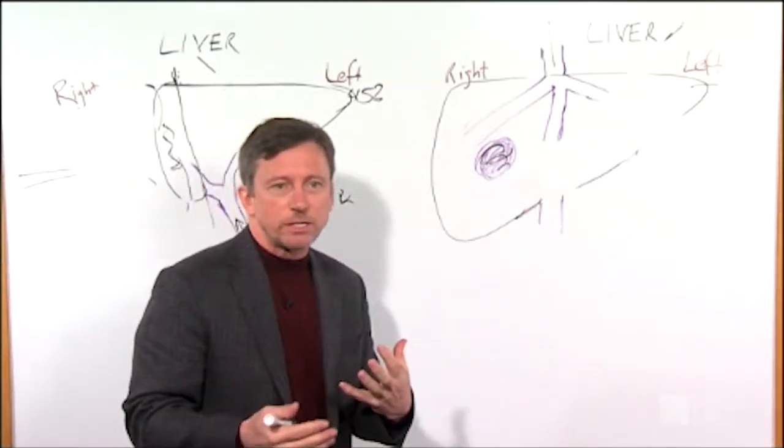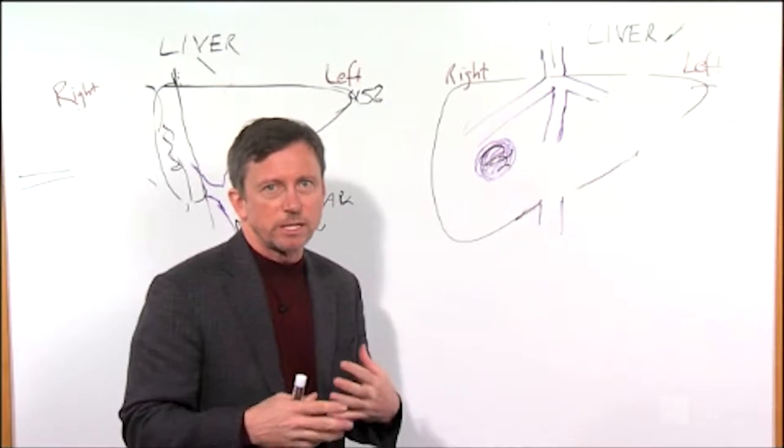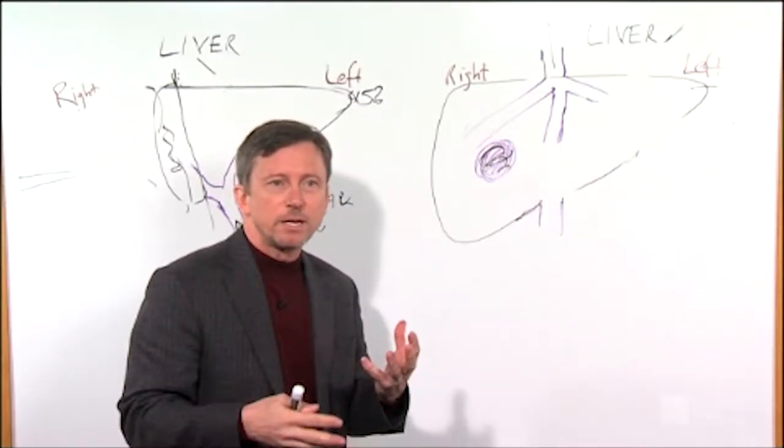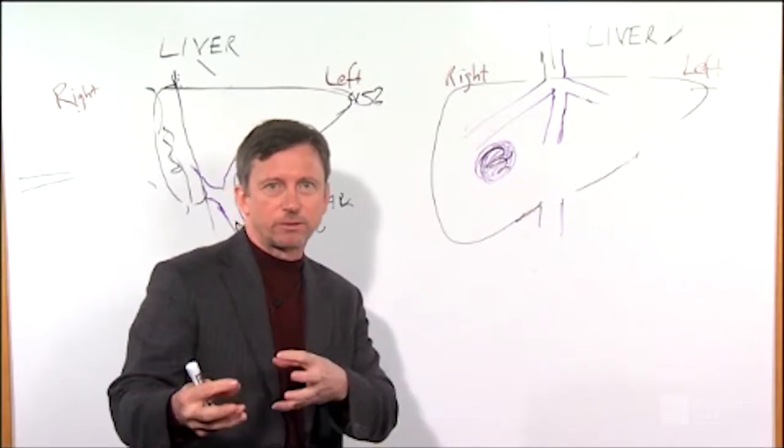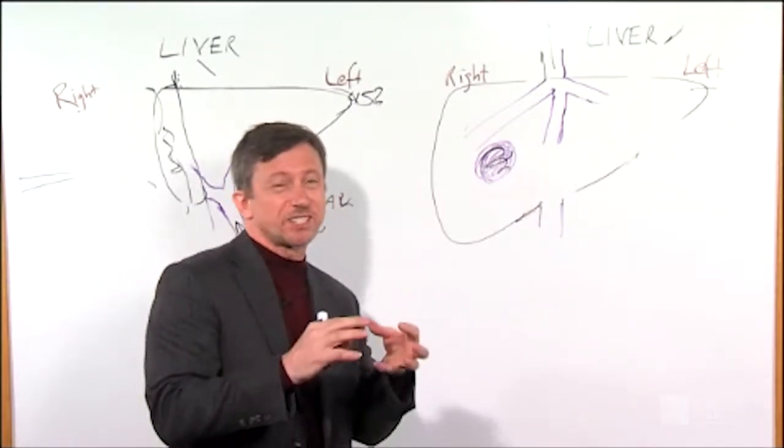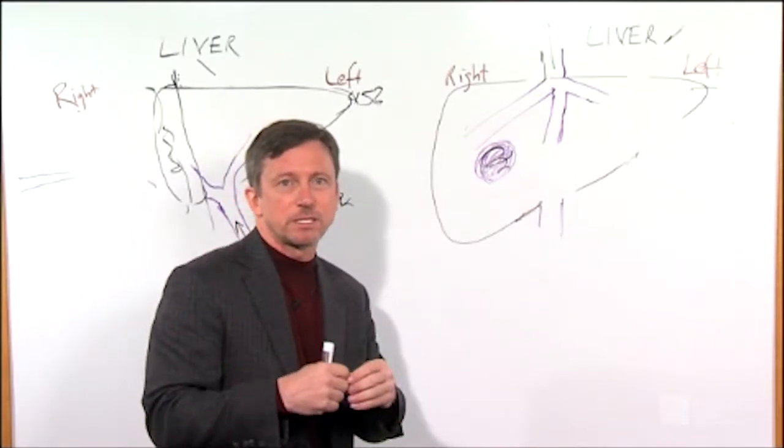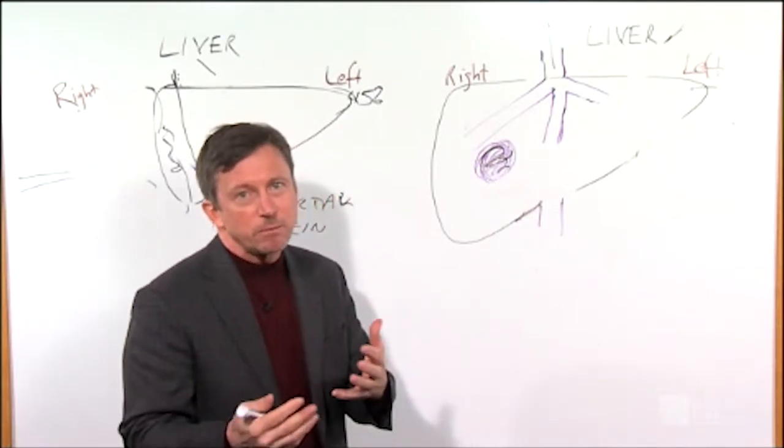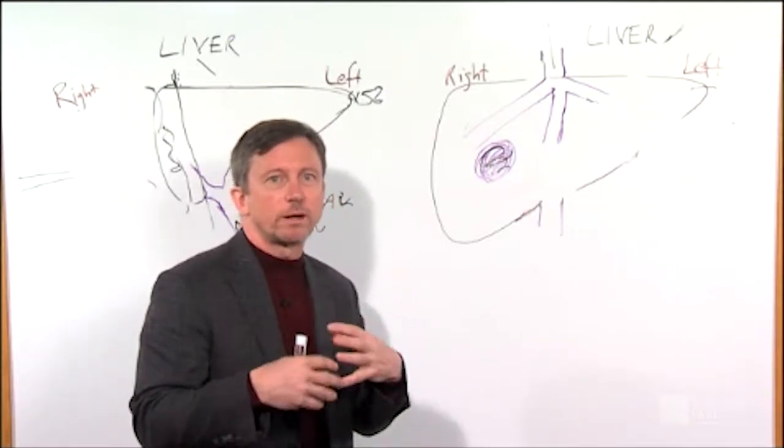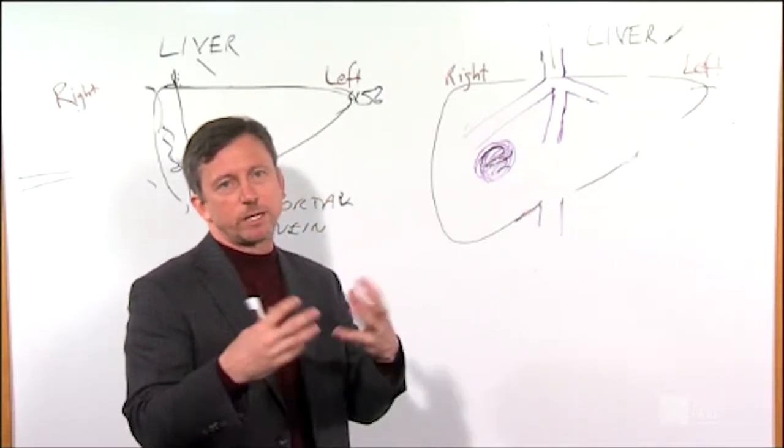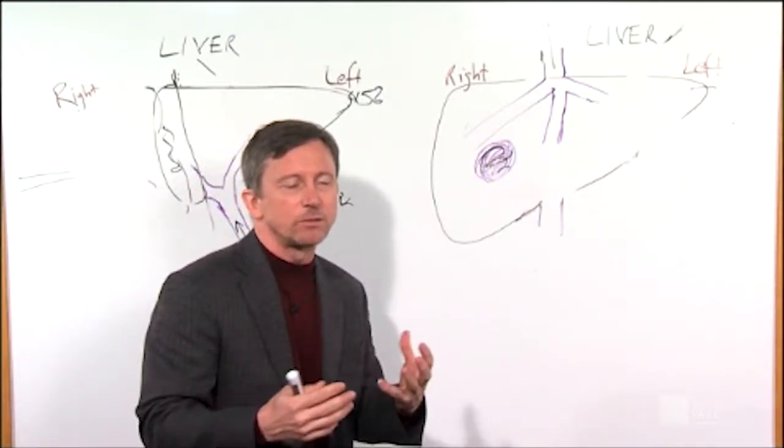The reason we do ablation is there's a host of reasons, either because the liver can't be removed, there's not enough liver to regenerate, or the tumor is in such a bad location that liver resection is not feasible. It may be because of the patient's age or their complicated medical condition where a liver resection is just too big a surgery for them to handle.